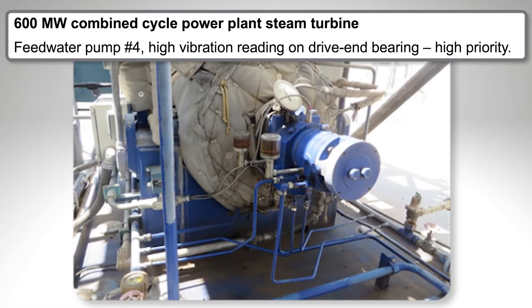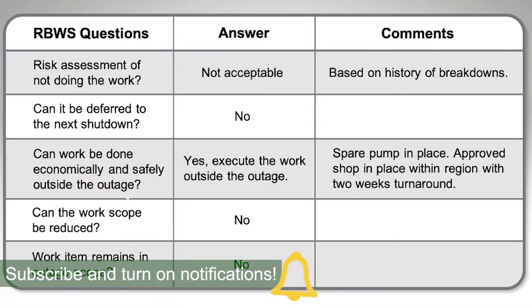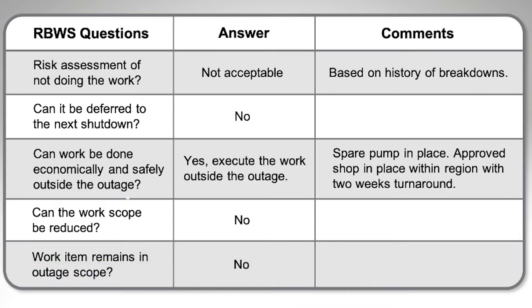I have some work orders here as an example. Work order number one is for a 600-megawatt combined cycle power plant steam turbine: feed water pump number four, high vibration reading on the drive-end bearing, high priority. The risk assessment of not doing the work is not acceptable based on history and breakdowns. Can it be deferred to the next shutdown? No. Can the work be done economically and safely outside the outage? Yes — execute the work outside the outage, because there is a spare pump in place and an approved shop within the region with a two-week turnaround. Can we reduce the work scope? No. Does the work item remain in outage scope? No — we can repair that pump and put it back in service without shutting the whole steam turbine down.